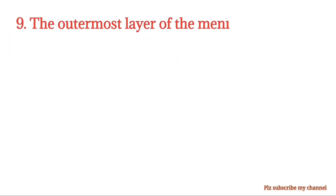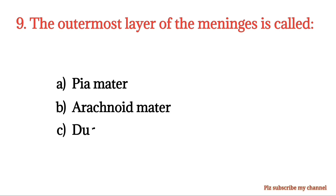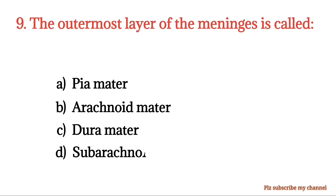MCQ number 9. The outermost layer of the meninges is called: Option A: Pia mater. Option B: Arachnoid mater. Option C: Dura mater. Option D: Subarachnoid space. The right option is Option C.